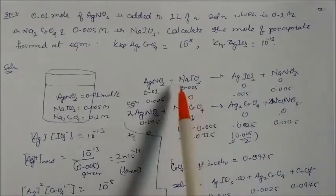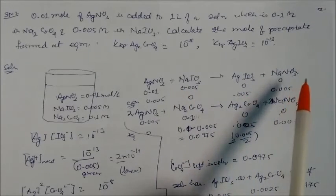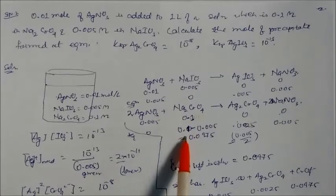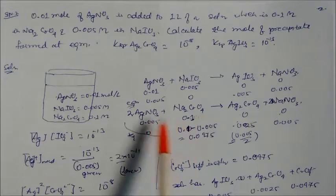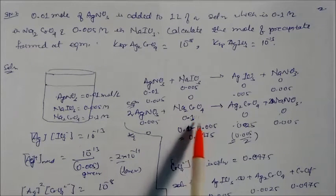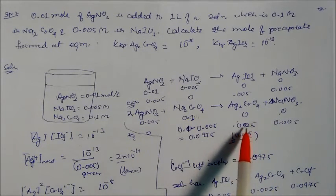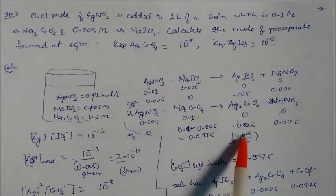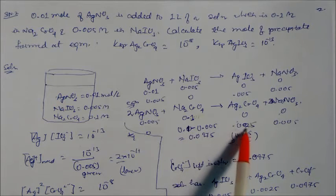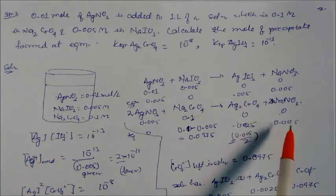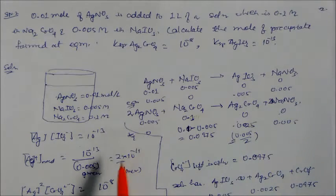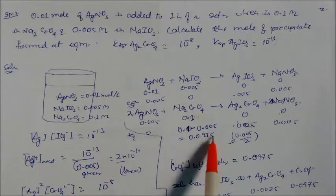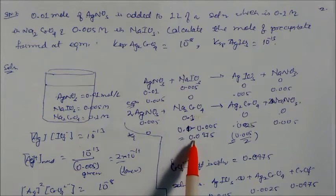Sodium iodate is 0.005 molarity. Reacting with silver nitrate, it gives 0.005 moles of silver iodate. The remaining silver nitrate then reacts with sodium chromate at 0.1 molarity. Because silver chromate is Ag₂CrO₄ (two silver ions per formula unit), the moles used are 0.05 divided by 2, giving 0.025 moles silver chromate. The sodium chromate remaining is 0.1 − 0.025 = 0.0975 molarity.